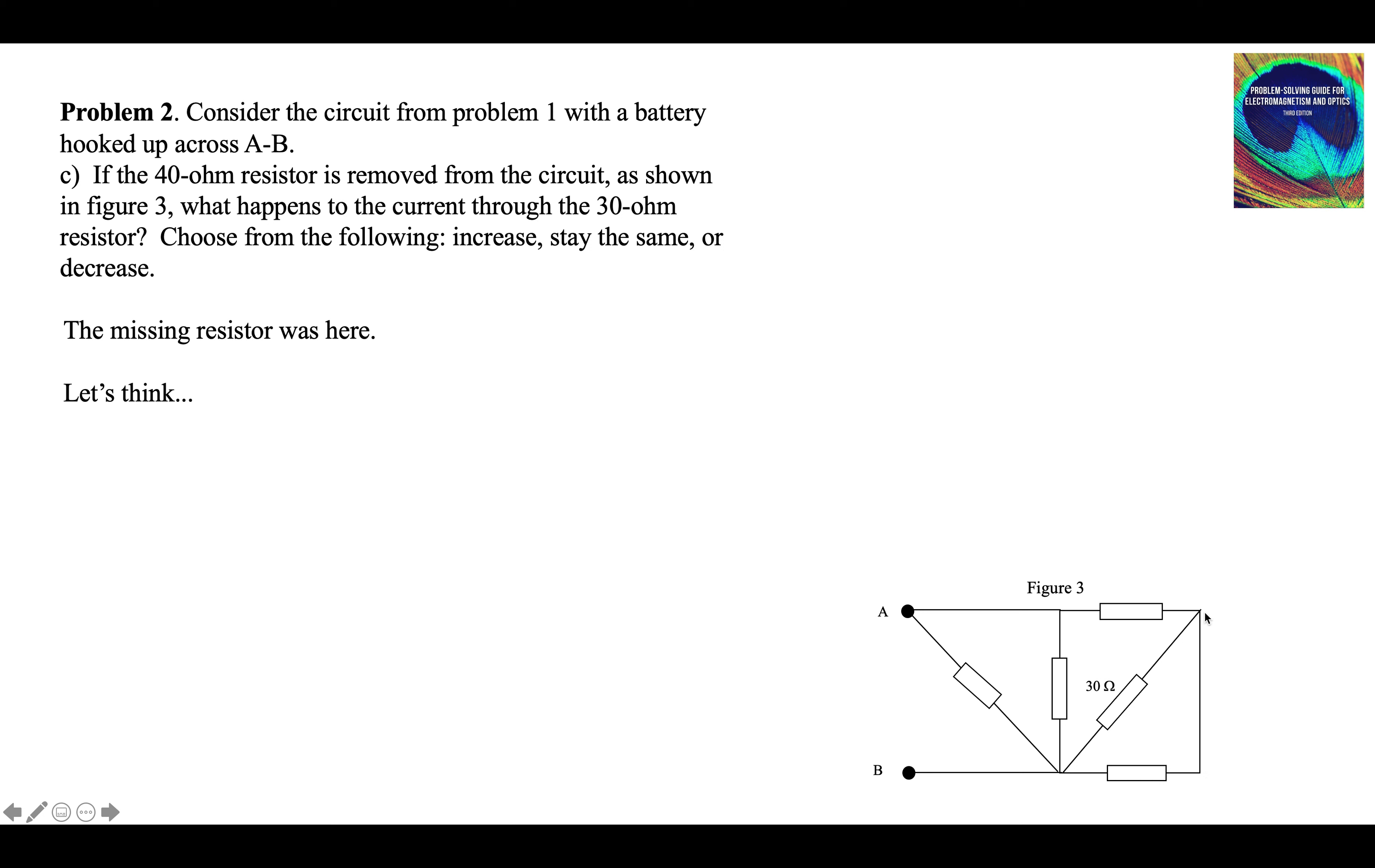Which means the current through this branch is going to go up. But when it splits, more of it's going to go here because this branch is now only 20 ohms. Before, this branch was 60 ohms. Most of the current went through the 30 ohm resistor.